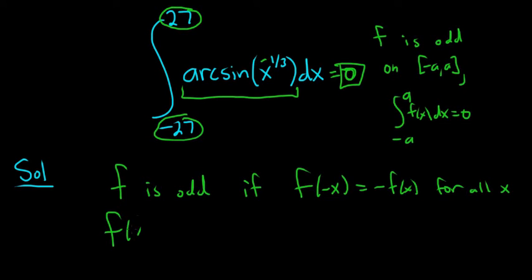So here our f of x in this problem is this function here, arc sine of x to the one-third. So all we have to do is show that this is an odd function or just explain that it's an odd function. So let's do it.